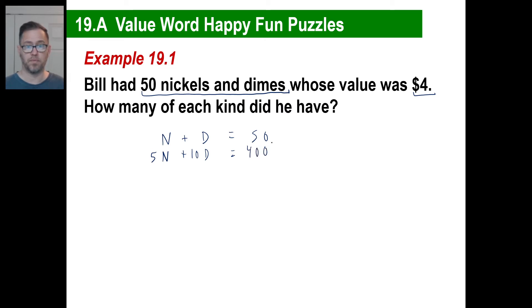If you do that with nickels, you do 10 times the number of dimes, obviously because dimes are worth 10 cents a piece. The value total, how many cents is $4 worth? 400. Boom. There we go. We've just created two variables, two equations. Now we can solve this, right?